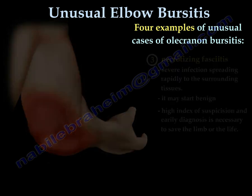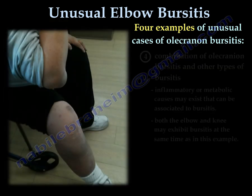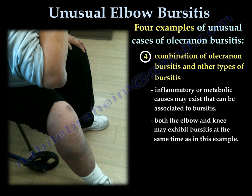Number four: combination of olecranon bursitis and other types of bursitis. Inflammatory or metabolic causes may cause bursitis of the elbow and other areas such as the knee. You can see an example of a patient with double bursitis — one in the elbow and one in the knee.